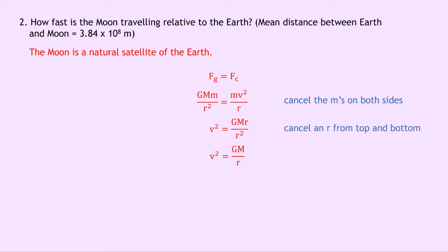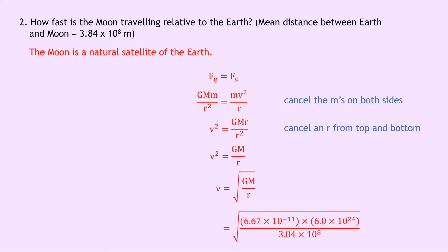We want to calculate the velocity v, so square rooting both sides we get v equals the square root of GM over r. Substituting in the numbers, we get the square root of 6.67 times 10 to the minus 11 times 6.0 times 10 to the 24, both from the datasheet, divided by 3.84 times 10 to the 8. Putting that into your calculator, we should get an answer of 1021 metres per second.